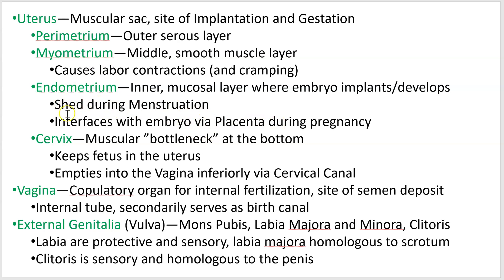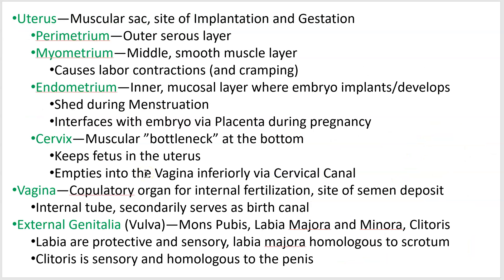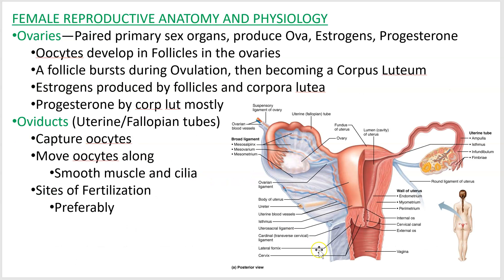The endometrium is that inner layer — this is where the embryo interfaces with the mother, and it's also what's shed during menstruation. The cervix is at the bottom of the uterus, and it's like a sphincter — a strong muscular circle that acts as a bottleneck to keep the fetus in. The fetus is upside down and gravity pulls downward, so you need that strong entrance or exit.